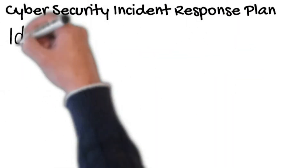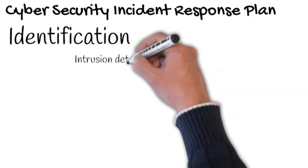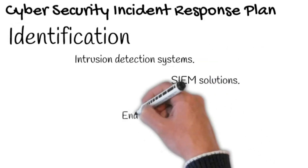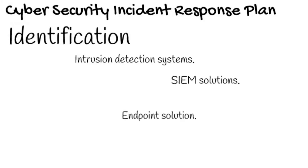Stage 2: Identification. Having an adequate setup is paramount to the ability to identify that an incident has occurred. This is usually where alerts from intrusion detection systems come up, web filtering gateways detect a suspicious external connection, SIEM solutions connect the dots of an attacker passing through the internal network, or an endpoint solution alerting of a phishing email opened. No matter the case, quick reaction from qualified security staff is needed in order to escalate and respond to the alerts.